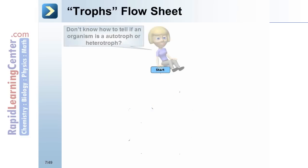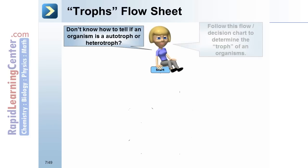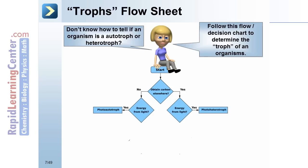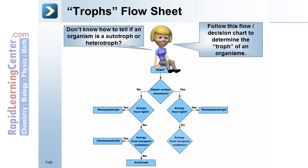Trophs flow sheet. Follow this decision chart to determine the troph of an organism. Does it obtain carbon elsewhere? If no: does it get energy from light? Yes — then it's a photo-autotroph. If not from light, does it get energy from inorganic oxidation? Yes — then it's a chemo-autotroph. No — then it's an autotroph. If it does obtain carbon elsewhere: energy from light? No. Energy from inorganic oxidation? Yes — then it's a chemo-heterotroph. No — then it's a heterotroph.